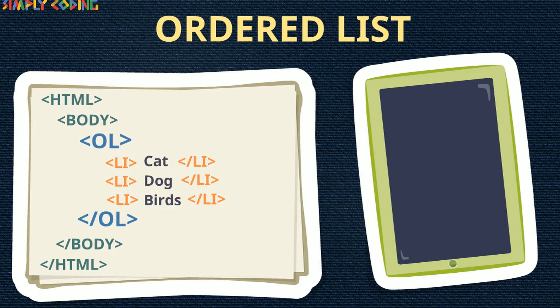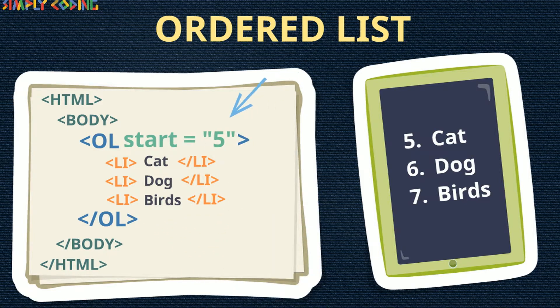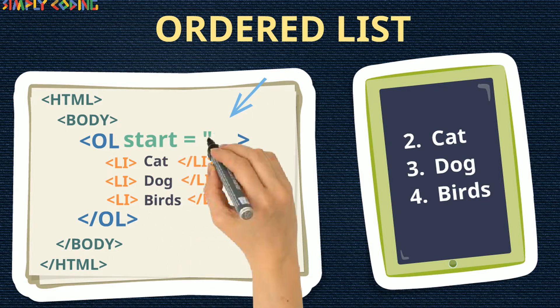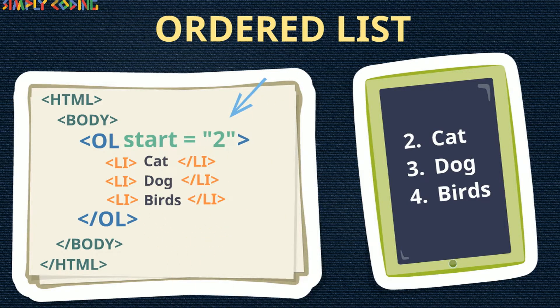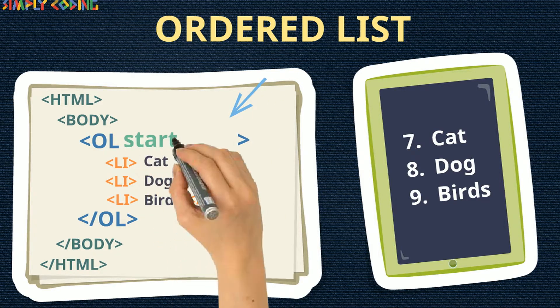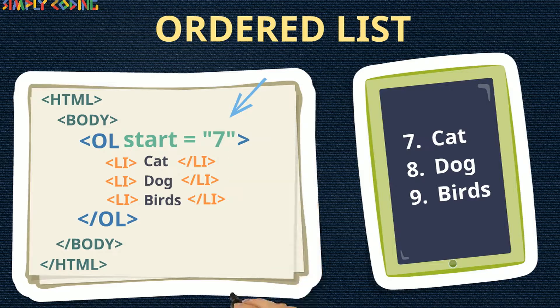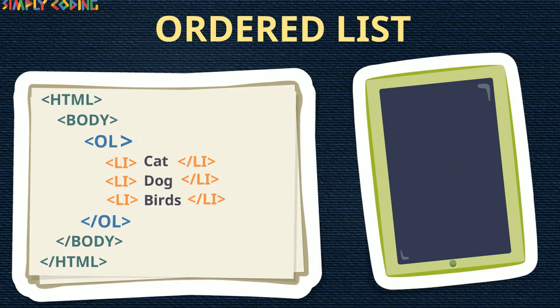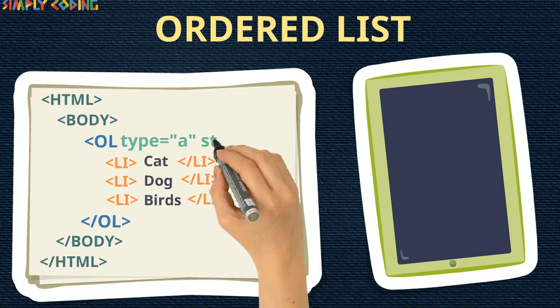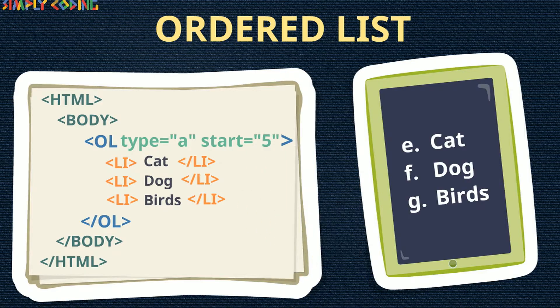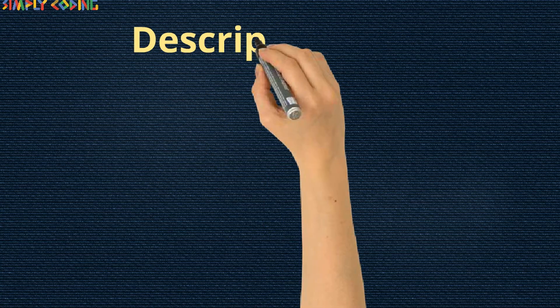Let's cover the second attribute, which is start. It can have any numeric value. It is used to specify the starting value of the integer counter. You can use normal numbers and do not need to specify an alphabet or Roman numerals to match with type.